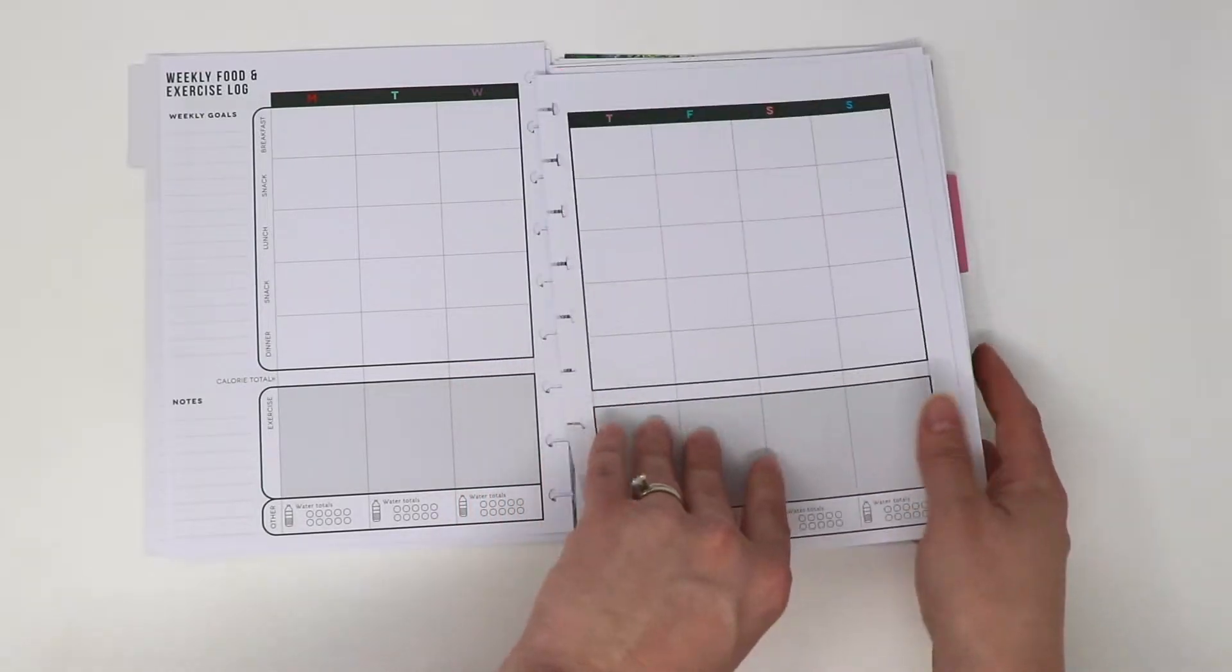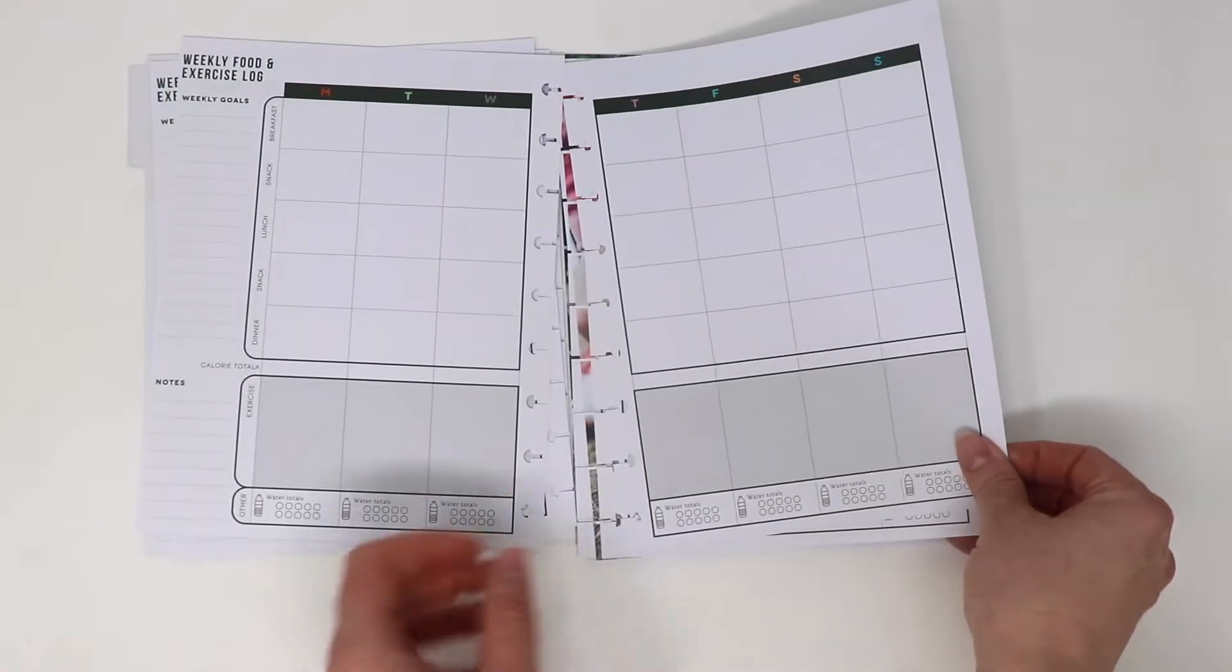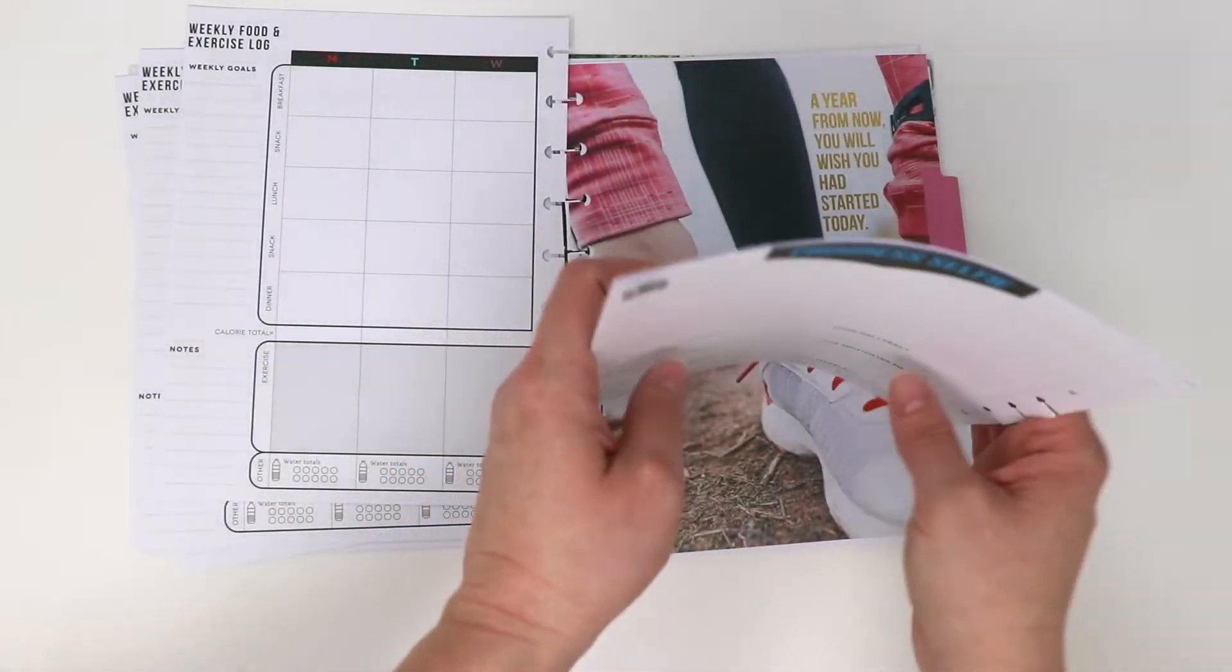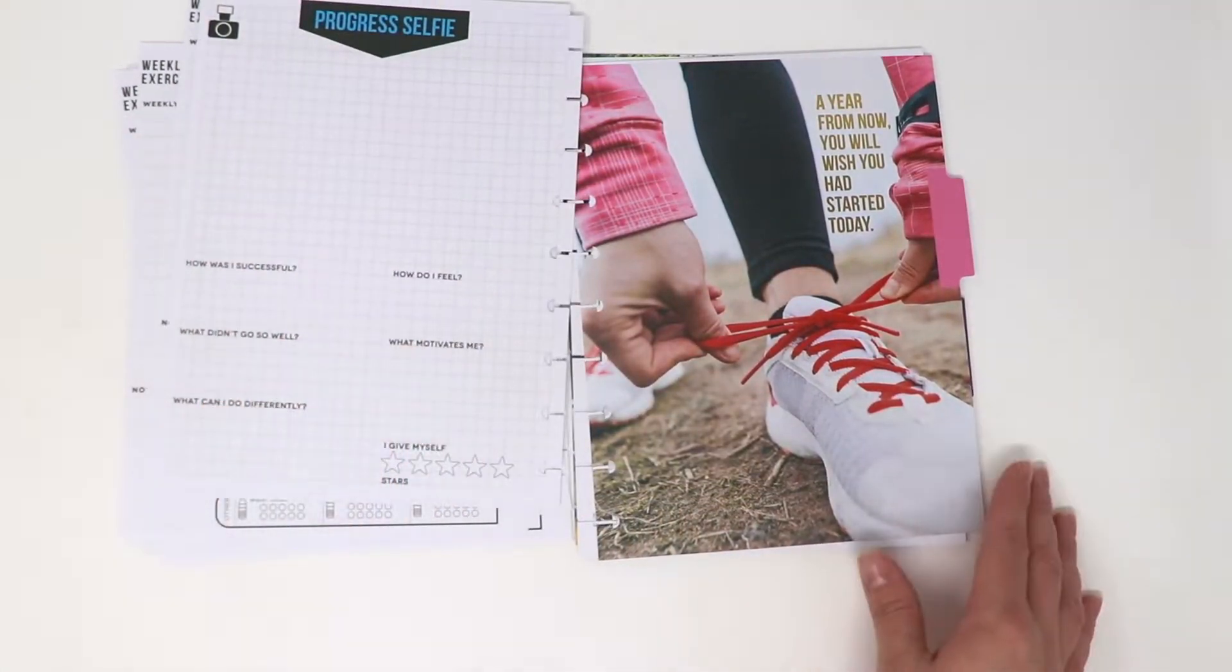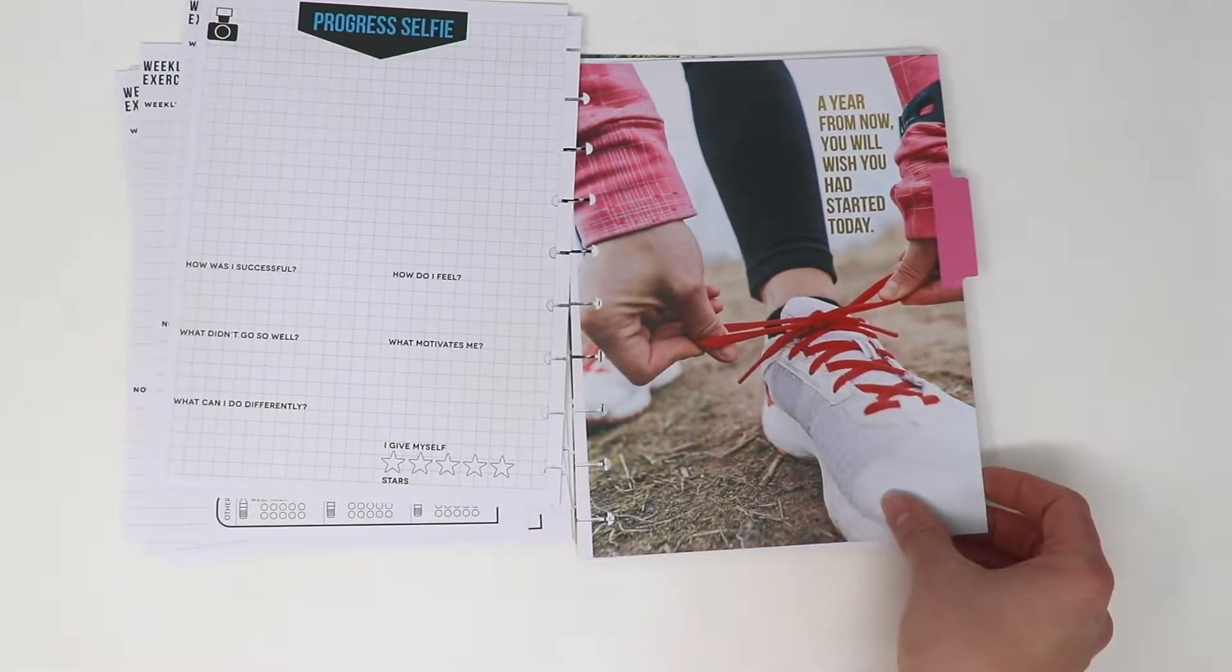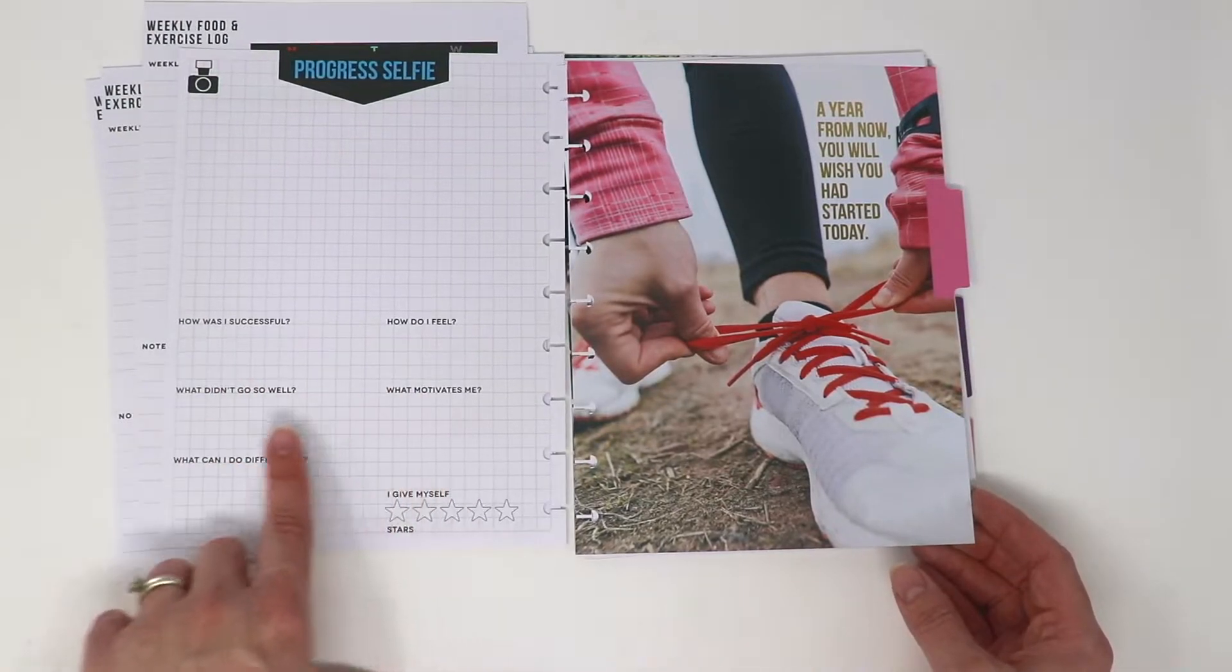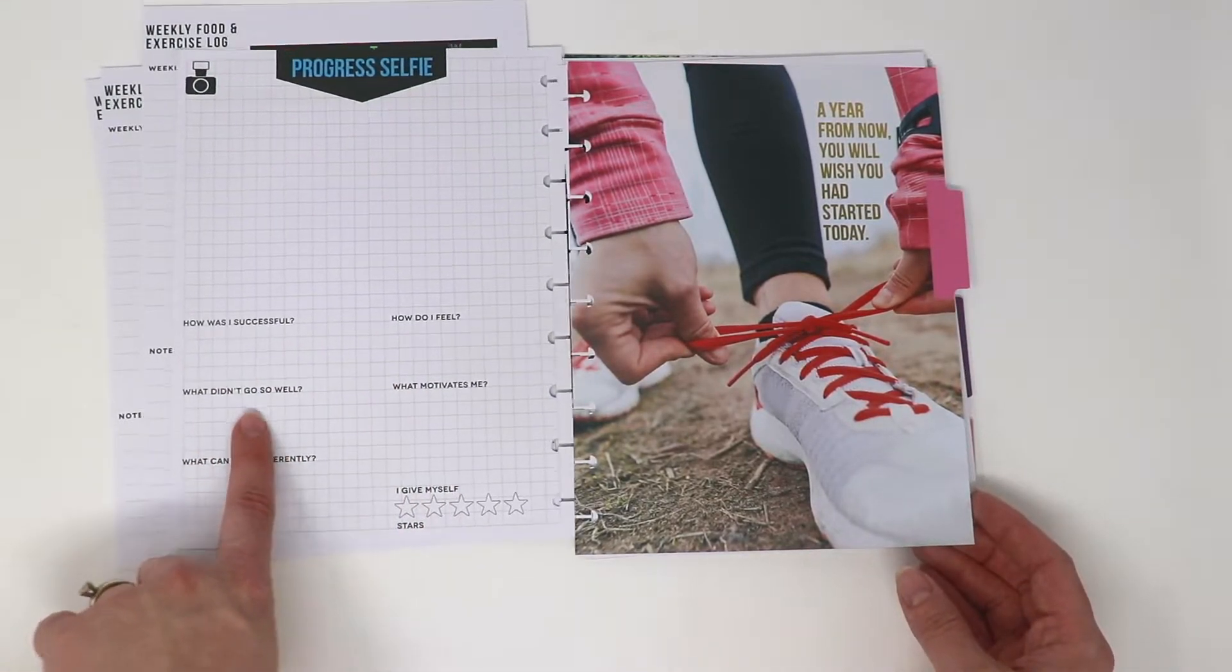So here are five weekly views basically, and then once you get past the weekly views you have your next divider: 'A year from now you will wish you had started today.' What motivates me, what didn't go so well - this is a really cool way to just reflect on the month, see what's working, reassess, and I really love that.